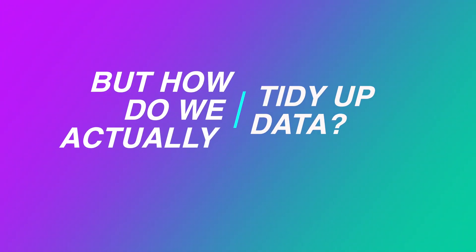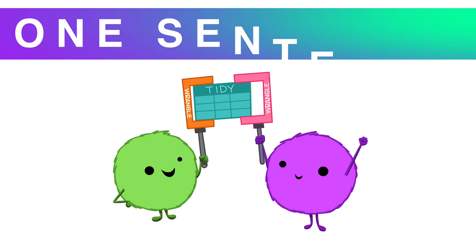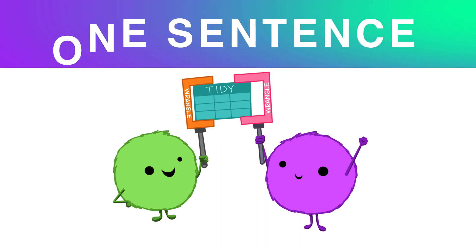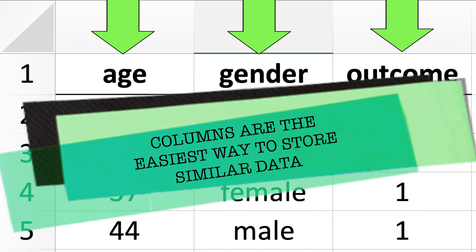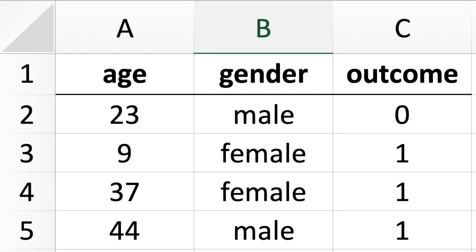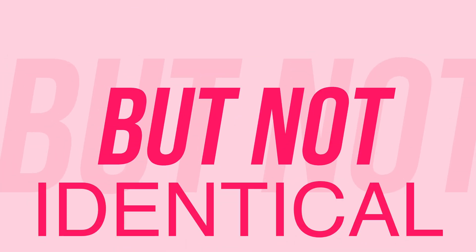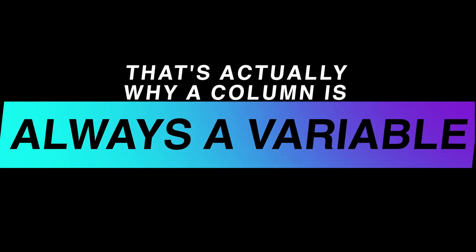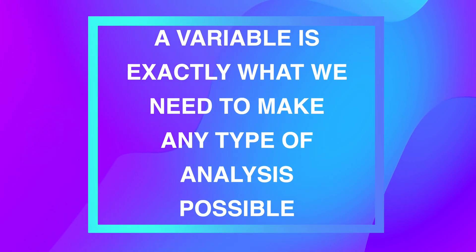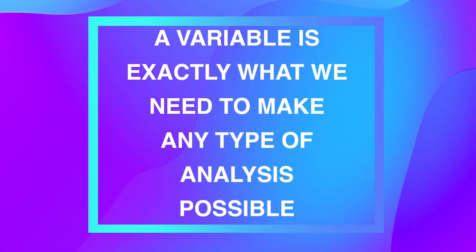But how do we actually tidy up data? Well, if I had to summarize the whole idea of tidy data into one sentence, I would say: whatever changes in your data, put it into a column. Why columns? Because columns are the easiest way to store similar data. The data in every column is similar but not identical — the data vary. For example, age varies from 0 to 100, gender varies from male to female. That's why a column is always a variable, and the variable is exactly what we need to make any type of analysis possible.